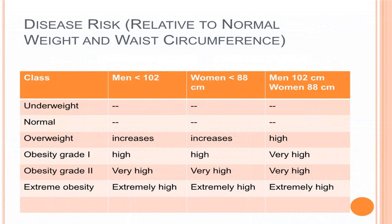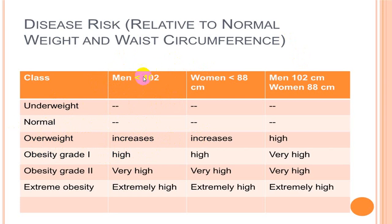Comparing males and females: in overweight males, waist circumference is more than 102 cm; in females, more than 88 cm. For Indian males, this upper limit is reduced to 90 cm. Depending on waist circumference, patients can be placed into two different groups.